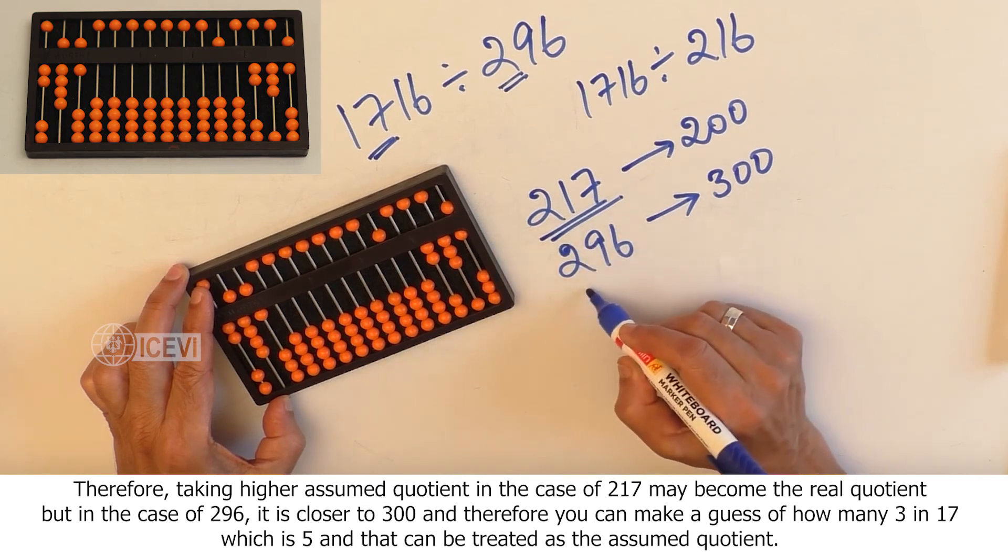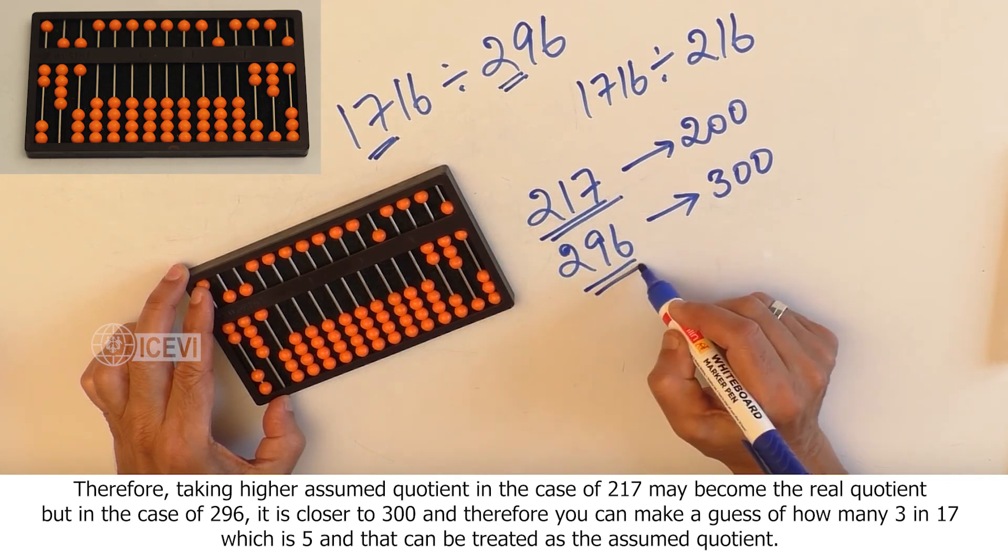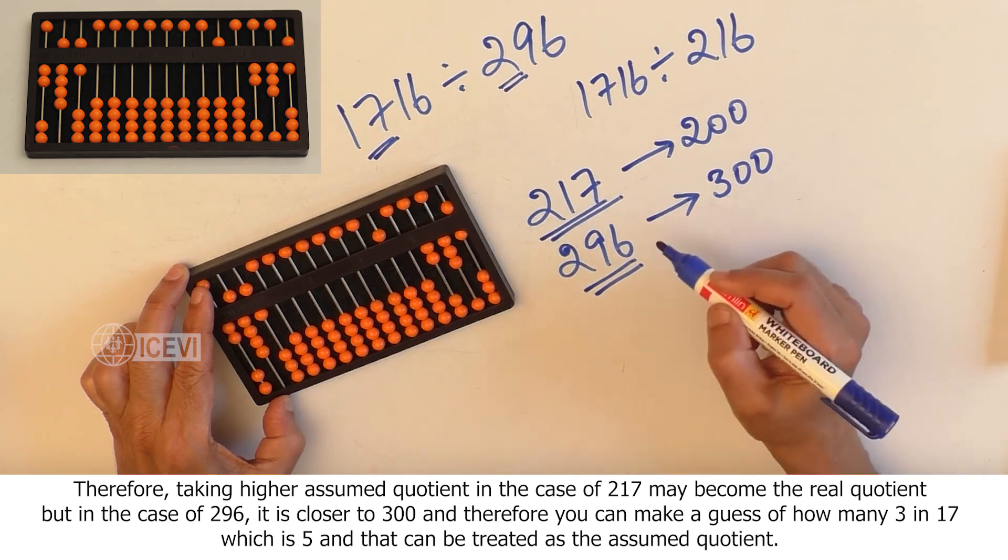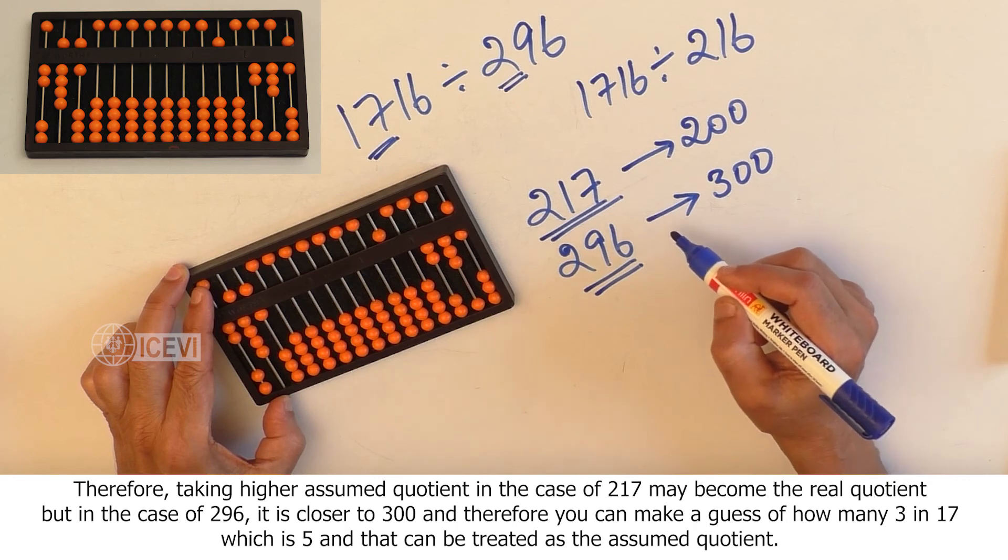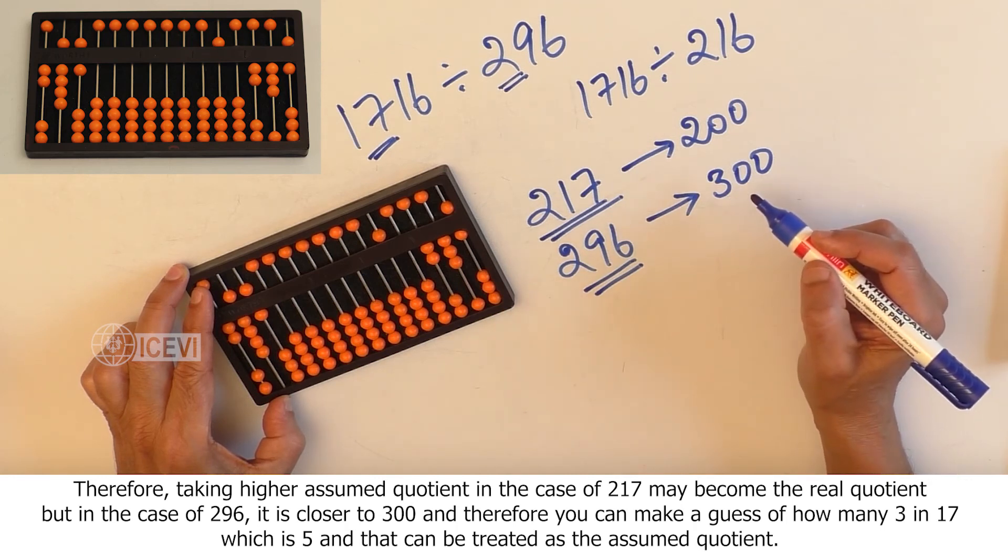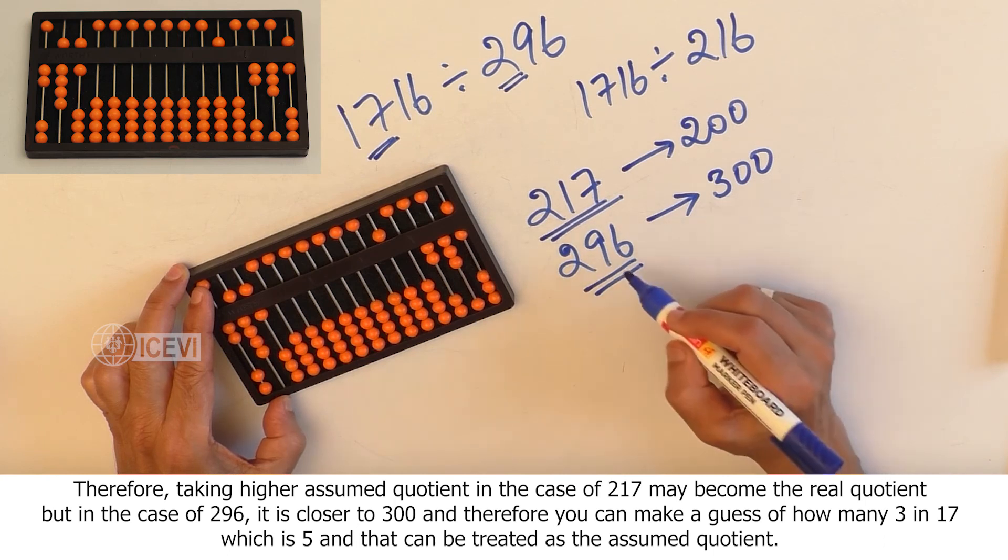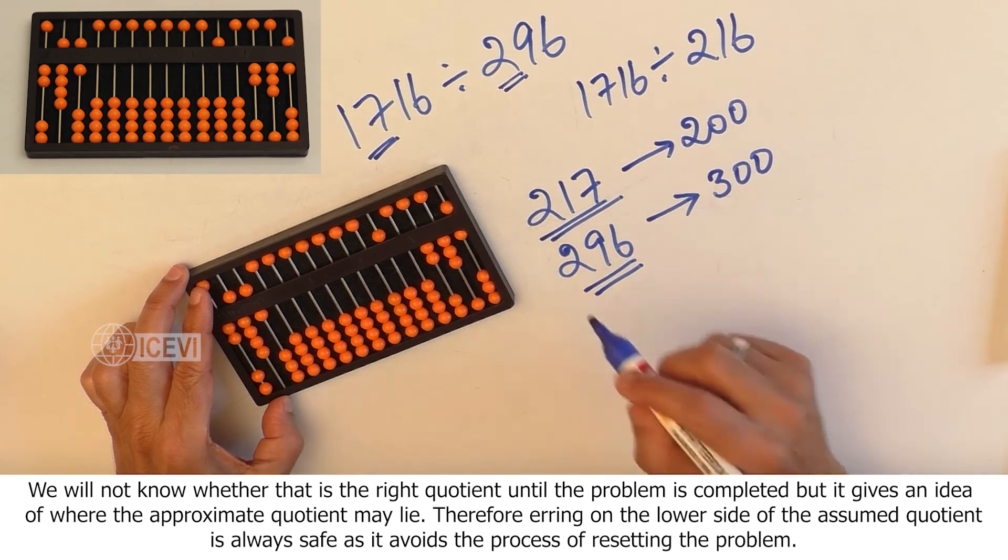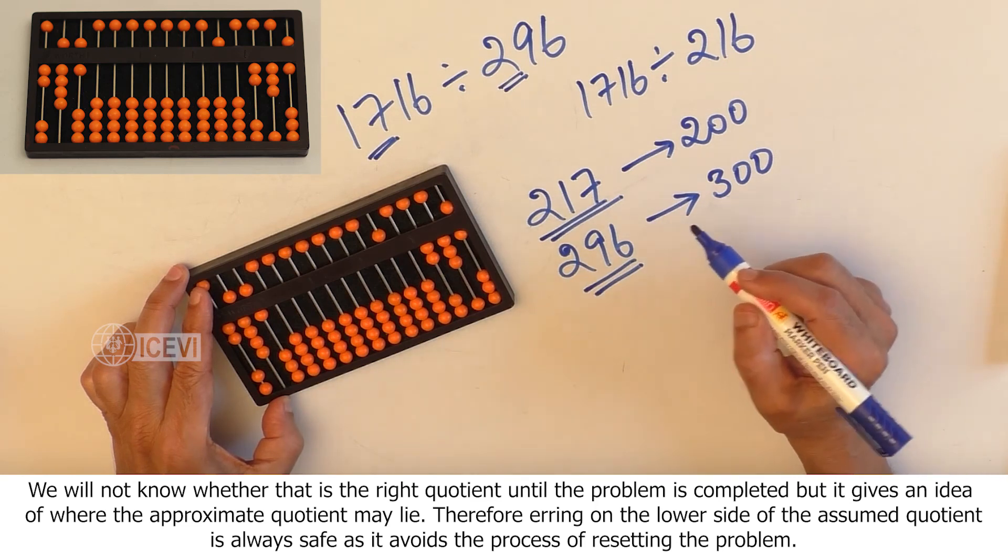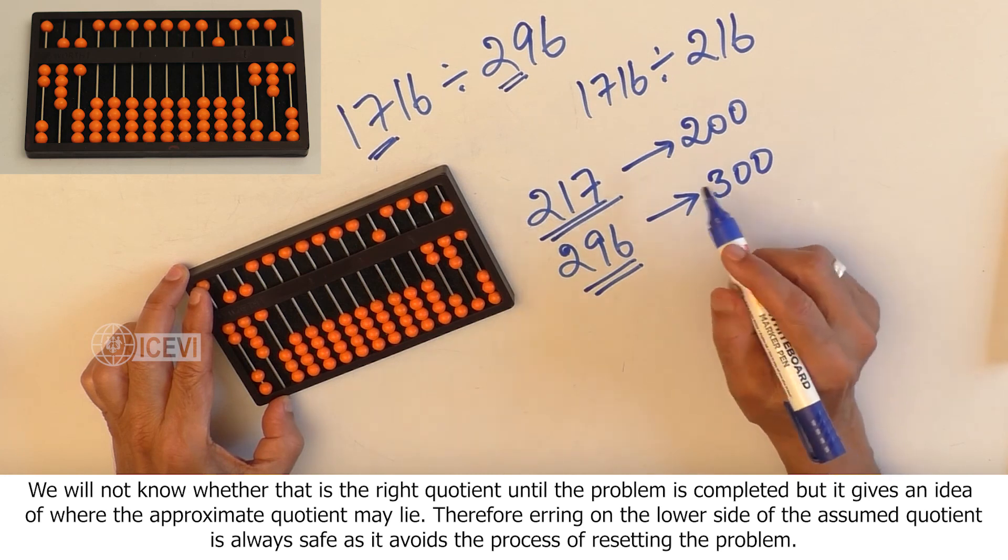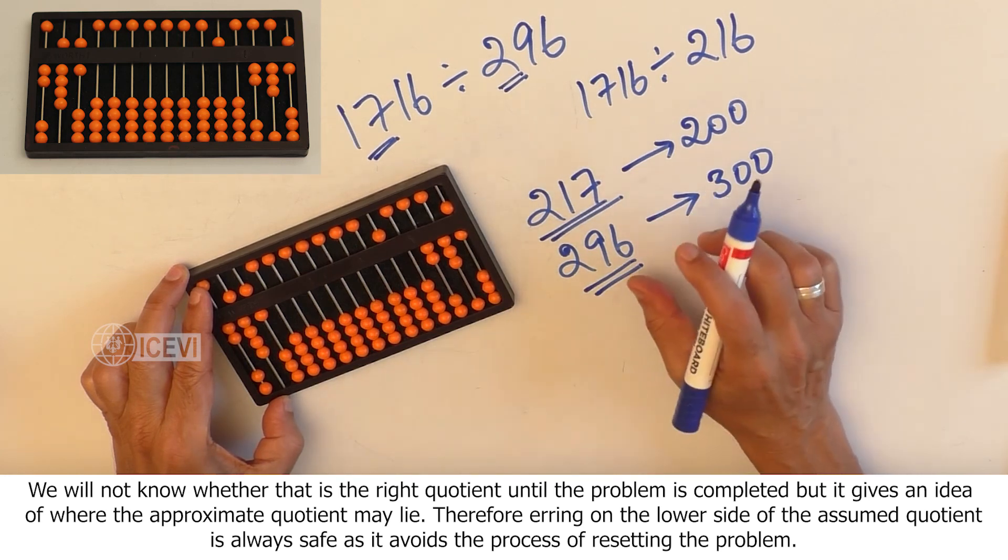But in the case of 296, it is closer to 300, and therefore you can make a guess of how many threes in 17, which is 5, and that can be treated as the assumed quotient. We will not know whether that is the right quotient until the problem is completed. But it gives an idea of where the approximate quotient may lie.